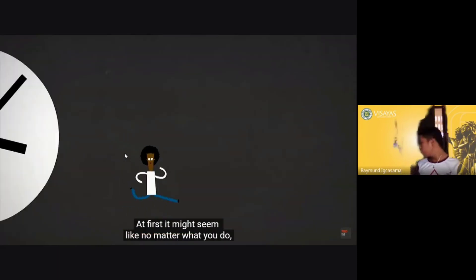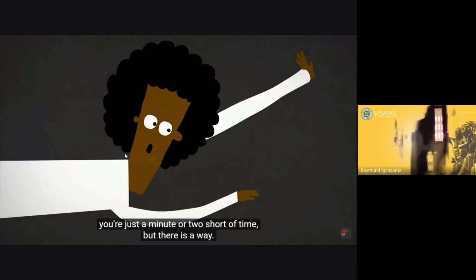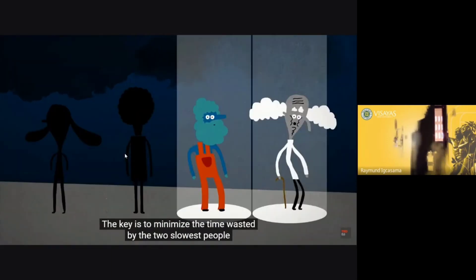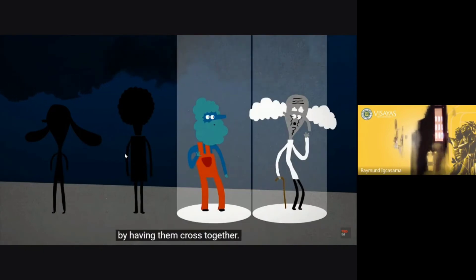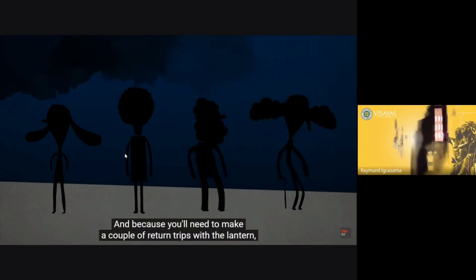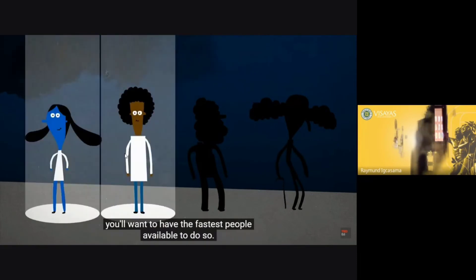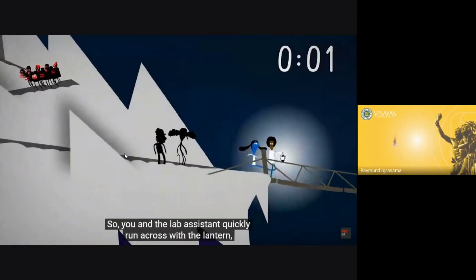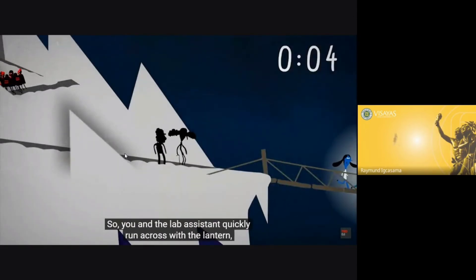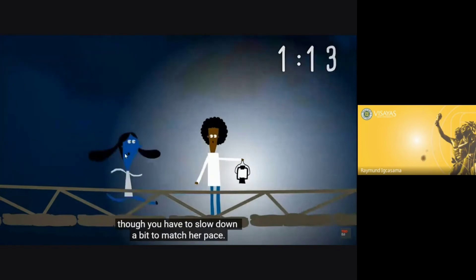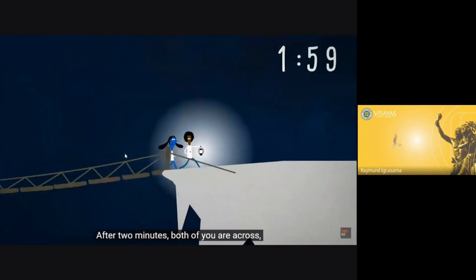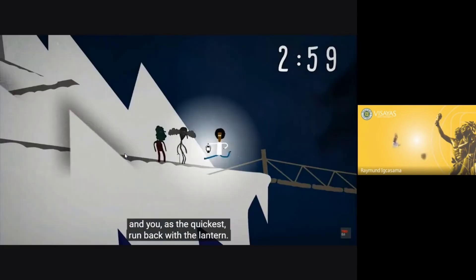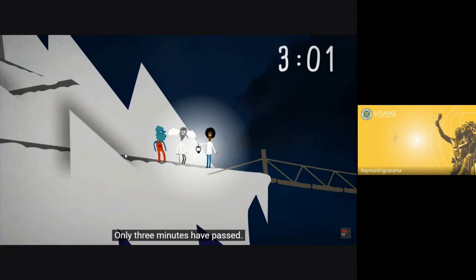Seems like no matter what you do, you're just a minute or two short of time. But there is a way. The key is to minimize the time wasted by the two slowest people by having them cross together. And because you'll need to make a couple of return trips with the lantern, you'll want to have the fastest people available to do so. So you and the lab assistant quickly run across with the lantern, though you have to slow down a bit to match her pace. After two minutes, both of you are across, and you, as the quickest, run back with the lantern. Only three minutes have passed.